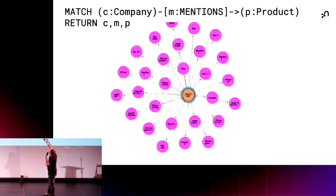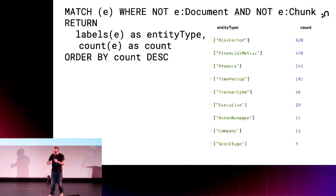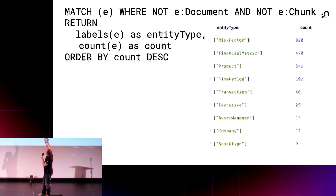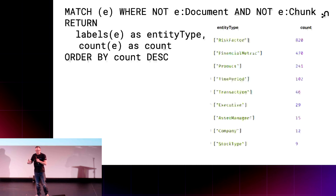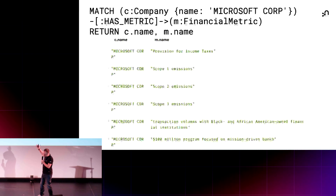For example, this is Apple — they mention all these products which look like Apple's products. And we can do analysis on that data: tell me the things talked about within this unstructured data. This, for example, shows factors mentioned in those returns — risks, financial metrics, products, and so on. We can start to say, show me the financial metrics that are important to Microsoft Corporation, and we get information out.